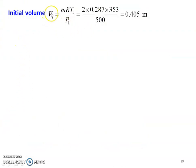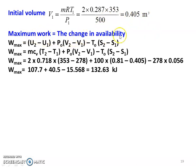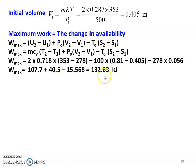Initial volume of the gas: V1 equal to MRT1 divided by P1: 2 into 0.287 into 353 divided by 500 equal to 0.405 metre cube. Maximum work equals change in availability. For the non-flow system: W max equal to (U2 minus U1) plus PO into (V2 minus V1) minus TO into (S2 minus S1). Substituting: 2 into 0.718 into (353 minus 278) plus 100 into (0.81 minus 0.405) minus 278 into 0.056. First term: 107.7, second term: plus 40.5, last term: minus 15.568, giving W max equal to 132.63 kJ.